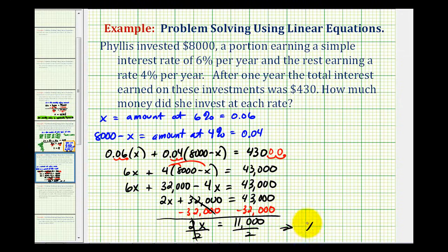This would be x equals 11,000 divided by two is 5,500. Remember, x is the amount of money invested at 6%, so she invested $5,500 at 6%.